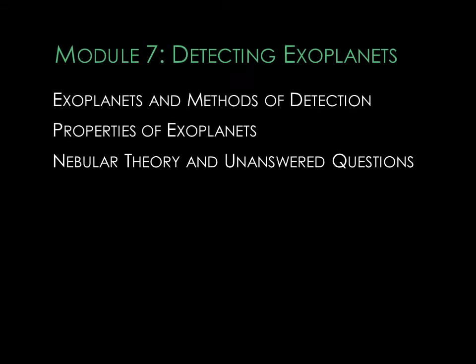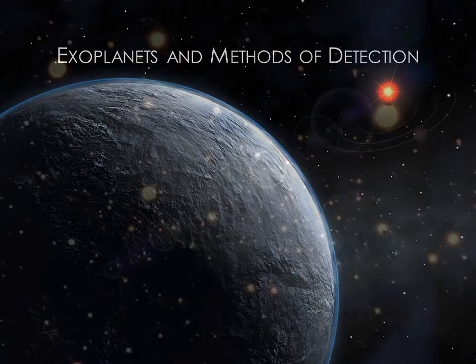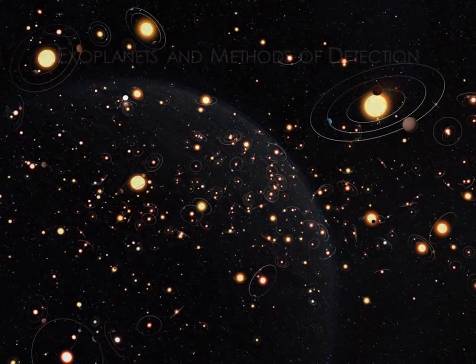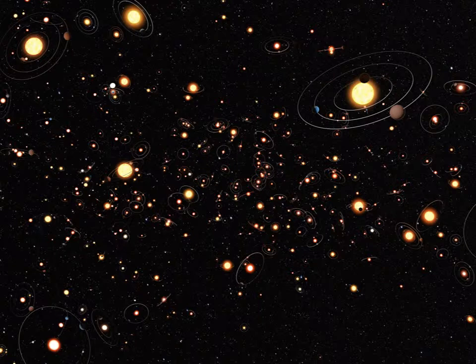Hello. In this lecture, we'll discuss how astronomers search for exoplanets and what we can learn about these planets. Our Milky Way galaxy has over 200 billion stars. Even if only a small fraction of those stars have planets, our galaxy should still be bursting at the seams with alien worlds.